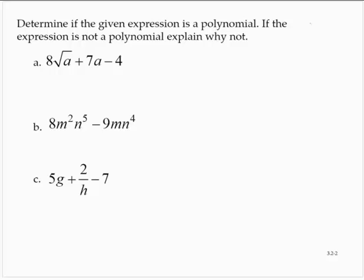Looking at the first expression: 8 times a times the square root of a, plus 7a minus 4. That first term — 8 times a times the square root of a — is the same as 8 times a to the 3/2 power. Now, 3/2 is not a natural number.